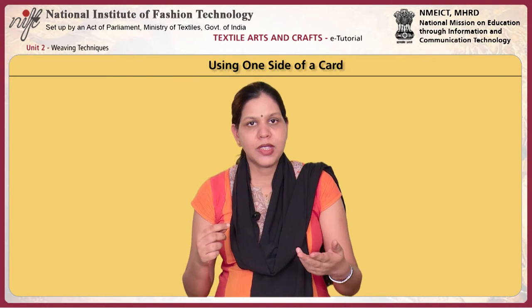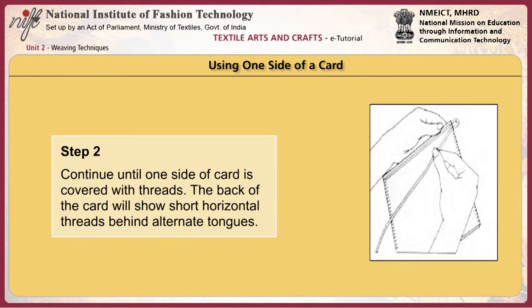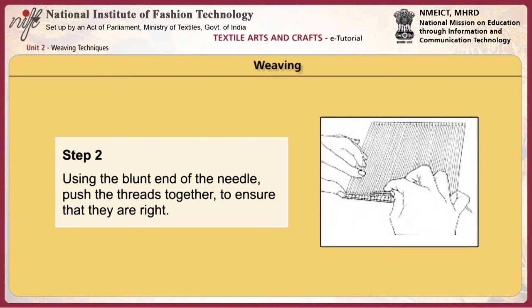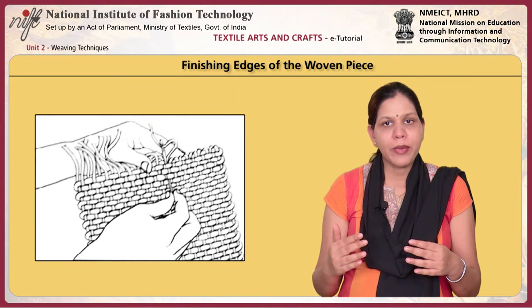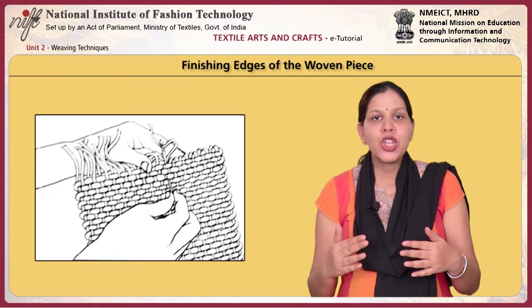To do this, take the yarn up through the first slit, wrap it around the tongue of the card and back through the second slit. Continue until one side of the card is covered with threads. The back of the card will show short horizontal threads behind alternate tongues. While weaving on cards, the warp threads are attached to the card and the weft threads are then woven into them from either right to left or left to right. Using a weaving needle and starting from either side, darn the weft threads under and over the warp threads. Using the blunt end of the needle, push the threads together to ensure that they are tight. After completing the woven fabric, the piece is removed from the card and the loose strands are woven back into the fabric for finishing by pushing them back with the help of the needle.